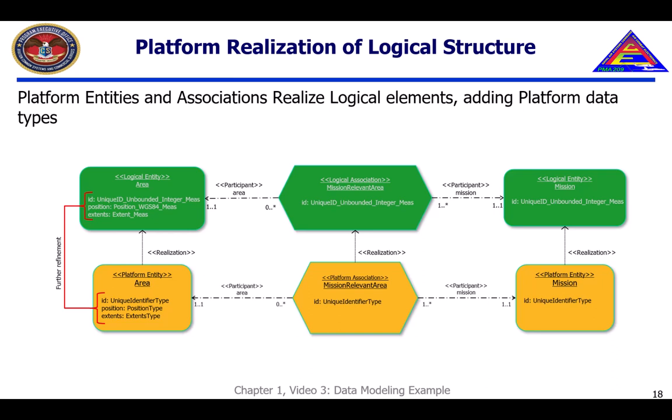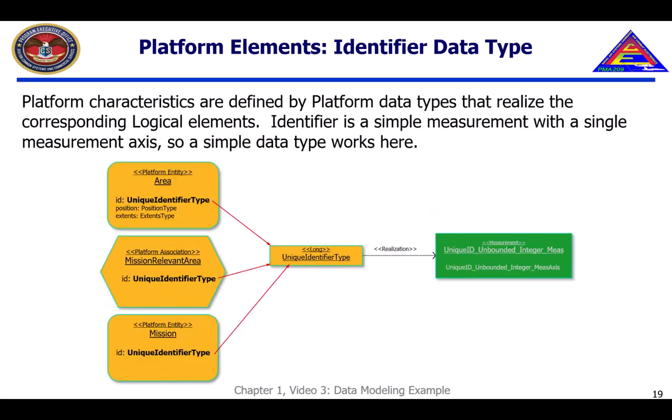The realization of entities and associations from the logical to platform levels follows the same pattern as the realization from the conceptual to logical levels. We find their representation using platform level element types that realize the corresponding logical element types. The data types at the platform level mimic the structure of the logical measurement and translate the logical data types to platform data types. Because identifier is a single axis measurement, it can be represented as a single data type definition. The platform level unique identifier type realizes the logical unique ID unbounded integer measurement as a long.